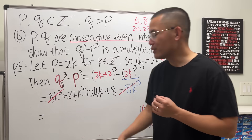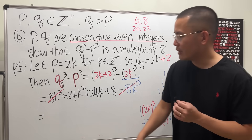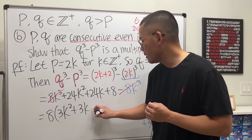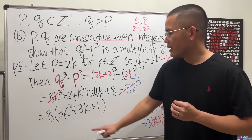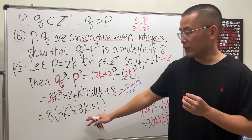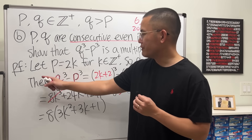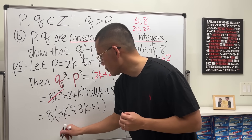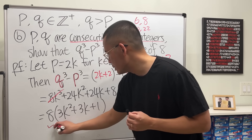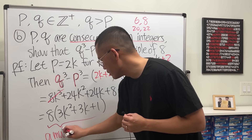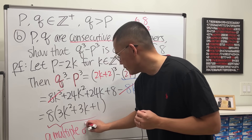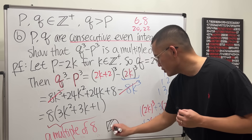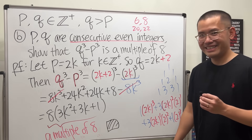To show the final result is a multiple of 8, factor out the 8 to get 8(3k² + 3k + 1). Since k is an integer, (3k² + 3k + 1) is also an integer. So we have shown this equals 8 times an integer, meaning it is a multiple of 8. We are done — box it and that's it.